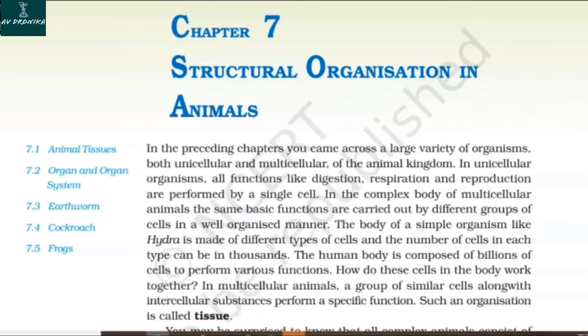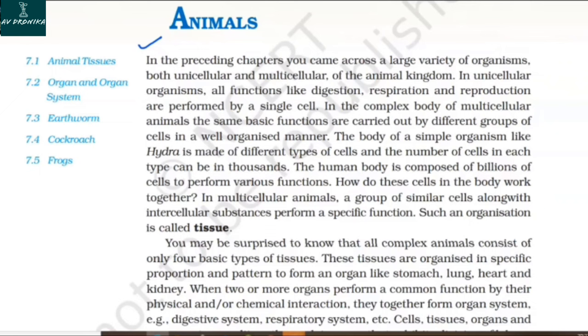Chapter 7: Structural Organization in Animals. In the preceding chapters, you came across a large variety of organisms, both unicellular and multicellular, of the animal kingdom. In a unicellular organism, all functions like digestion, respiration, and reproduction are performed by a single cell. In the complex body of multicellular animals, the same basic functions are carried out by different groups of cells in a well-organized manner.